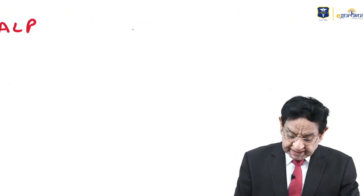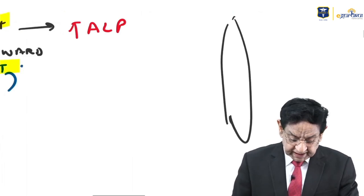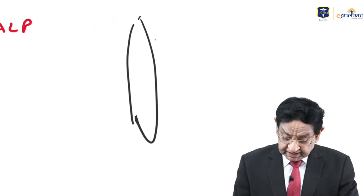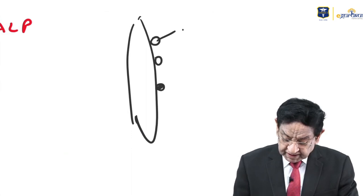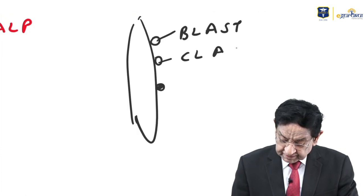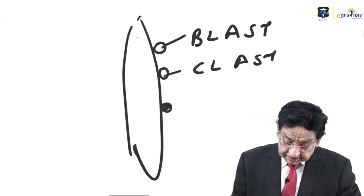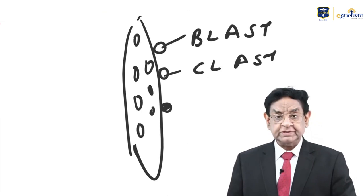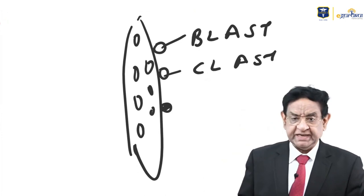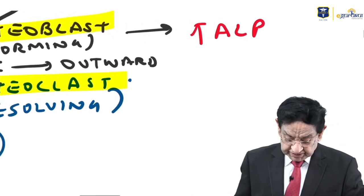In cancellous bone, there is no central canal. Osteoblasts and osteoclasts are on the surface and arranged in parallel — not concentrically. The cells are arranged in parallel, unlike the concentric arrangement in cortical bone. This is the key difference between cortical and cancellous bone histology.